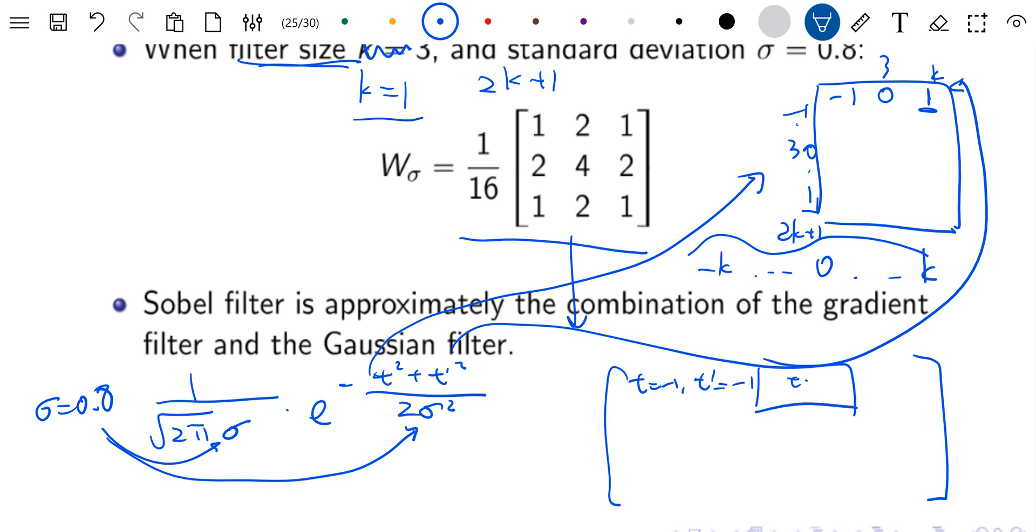It's symmetric, so it doesn't matter whether you say t is the column number or the row number. Similarly, this is t equals 0, t prime equals 0, and so on. You can fill in all the other entries - for each one, just substitute these two numbers into the formula.